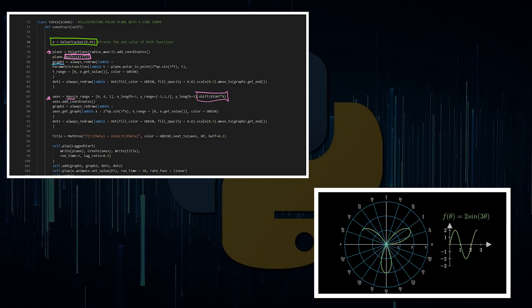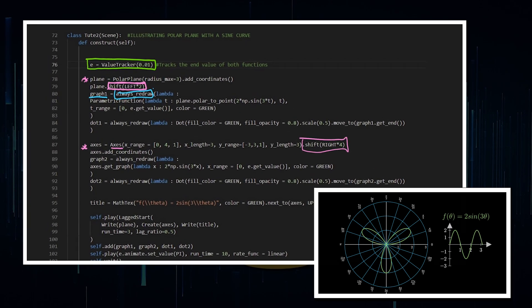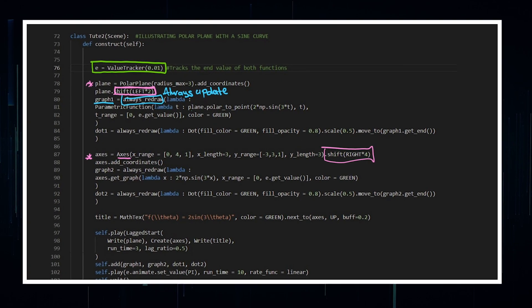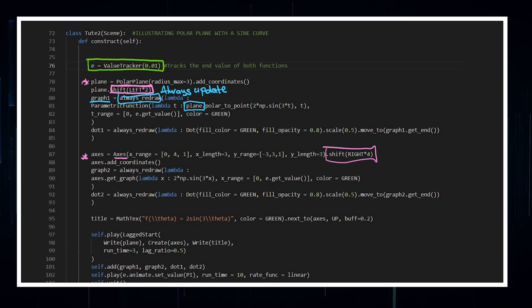So here I've got my graph one there. And again, I've got this always_redraw, which is really just saying, always update, where it's a parametric function. And I'm calling the point, polar to point. So it's like coordinates to point on the polar plane for the polar plane that is called plane. That's this one here. If you call your plane G for whatever reason, then you've got to go G.polar_to_point. So you're calling to that particular plane because you can have multiple on the screen. Now, this is polar coordinates. So we go r, theta, where you want your r value, the radius to be given by that function. And then you want the theta value to just be given by the value of t, where t ranges from zero to the end value. So this always needs to, this needs to be always_redraw because this is going to be constantly updating with this value tracker given up there.